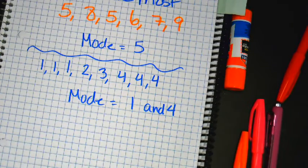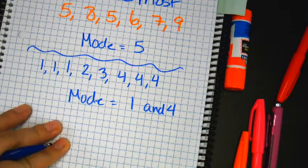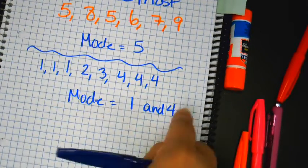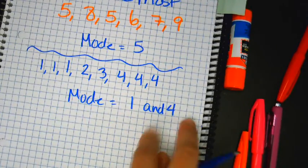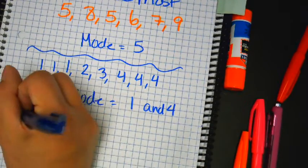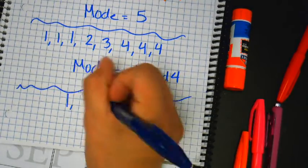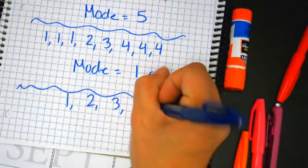There's a couple of things I have to teach you. One was the easy example where the five repeats, so it's five. This example shows you that sometimes there's two modes. Now, the third example I have to give you, let's just go 1, 2, 3, 4, 5.